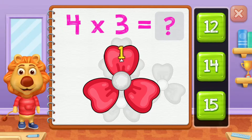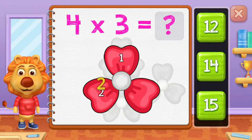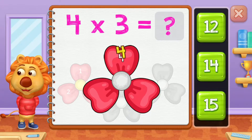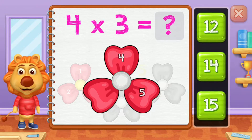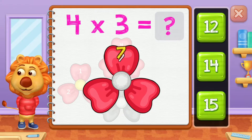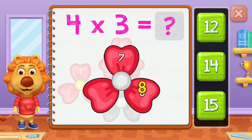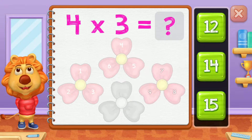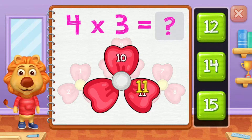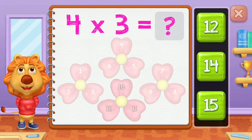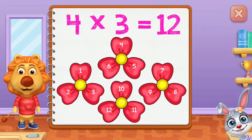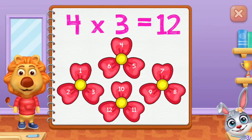One, two, three, four, five, six, seven, eight, nine, ten, eleven, twelve! Four groups of three equals twelve!